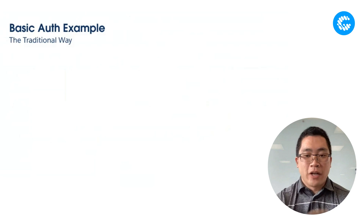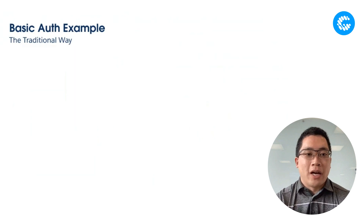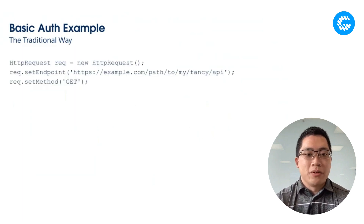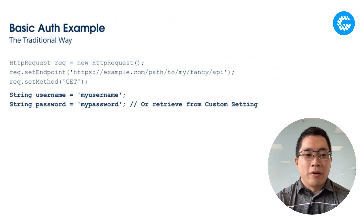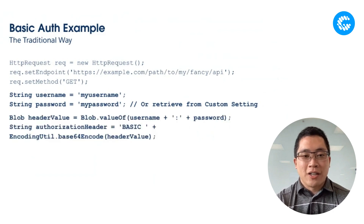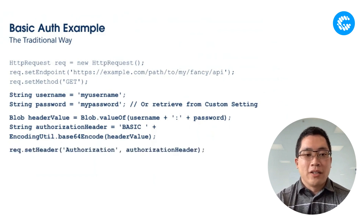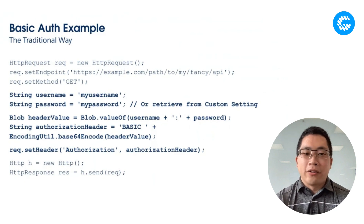Let's look at a traditional way of authenticating a basic API callout to an external system. You construct the request, set the endpoint, set the method, grab your username and password — in this case hardcoded, but you may have put this in a custom setting. You then construct the authorization header by concatenating and encoding those credentials, put that in the authorization header, set that header, and send the request. You'll see lots of examples of people doing it this way, but maybe there's an easier way.